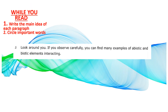Paragraph 5: Look around you. If you observe carefully, you can find many examples of abiotic and biotic elements interacting. Now pause the video, write the main idea, and circle important words.